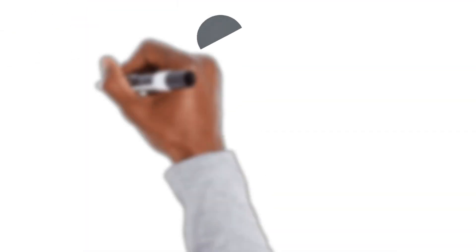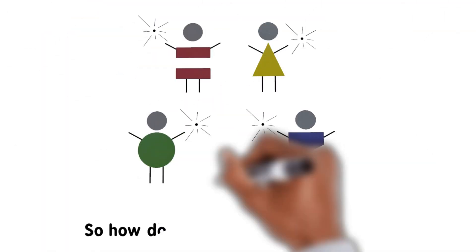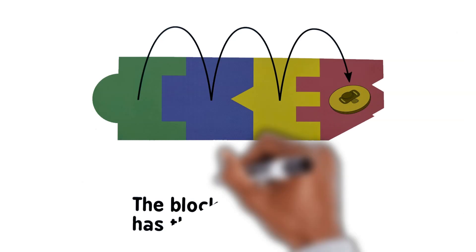But a digital coin is invisible. So how do we know who has the coin? The blockchain tracks who has the coin with a puzzle.